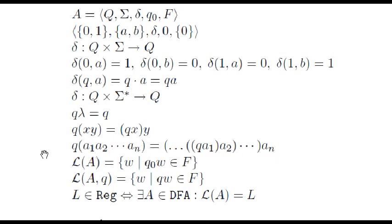With these notations, it is easy to define the language recognized by a deterministic finite automaton as the set of words that take us from the initial state to an accepting state.